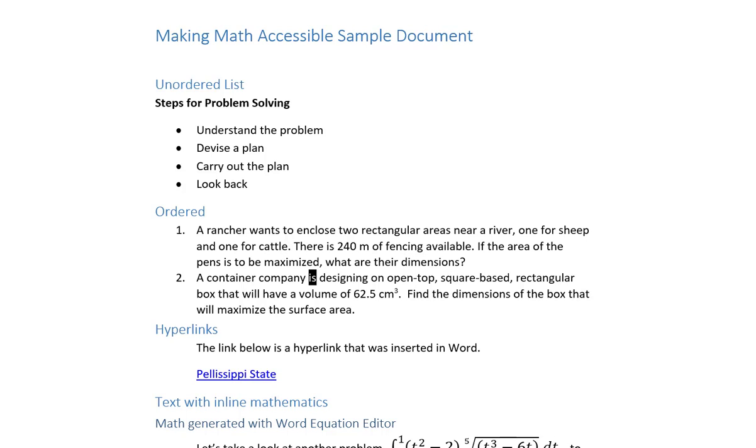A container company is designing an open top, square-based, rectangular box that will have a volume of 62.5 cubic centimeters. Find the dimensions of the box that will maximize the surface area.